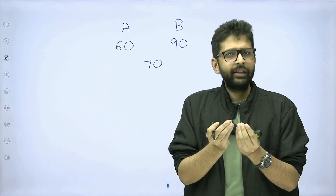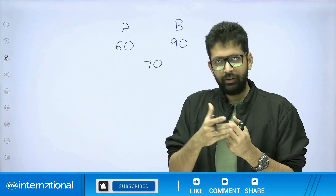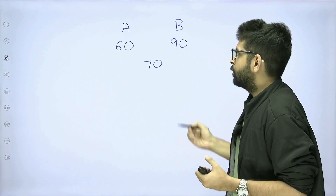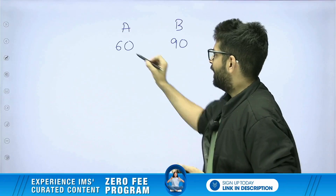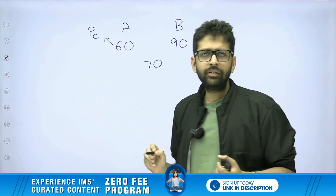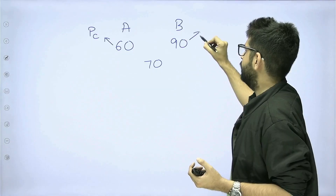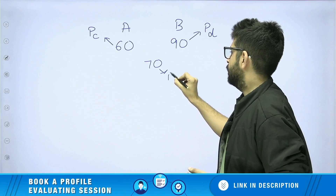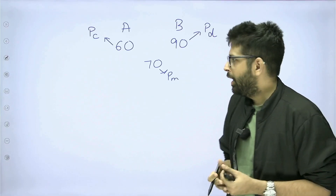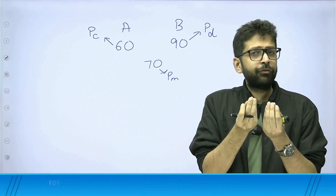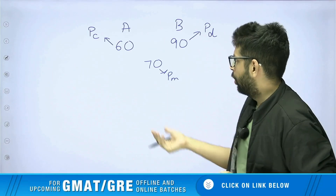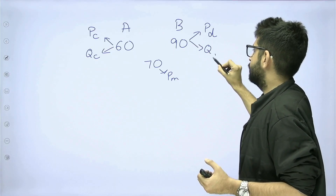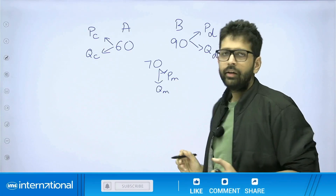The next 2 to 3 minutes are going to be slightly boring where I would be explaining the entire concept. If you are thorough with this topic, you can always skip this part, otherwise please try and understand what allegation is. Let's give names to all of these terms. This 60 is known as PC — price of the cheaper quality rice. This 90 is PD — price of the dearer quality rice. And this 70 is PM — the mean price we want to achieve. The quantity of brand A is QC, the quantity of brand B is QD, and the final quantity is QM.